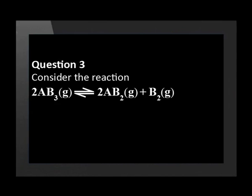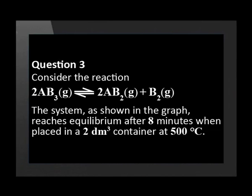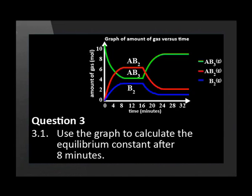Consider the reaction when AB₃ breaks up into AB₂ and B₂. The system as shown in the graph reaches equilibrium after 8 minutes when placed in a 2 decimeter cubed container at 500 degrees Celsius. Use the graph to calculate the equilibrium constant after 8 minutes.